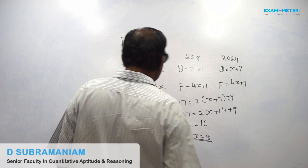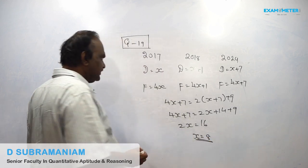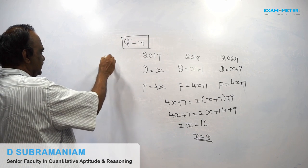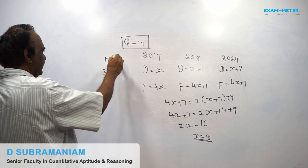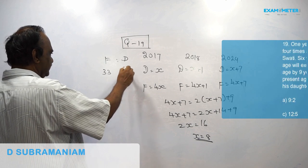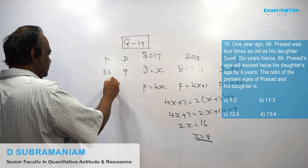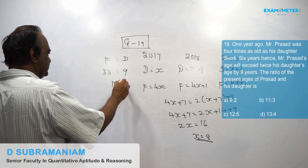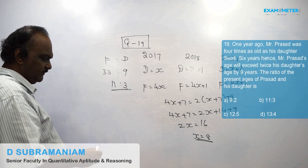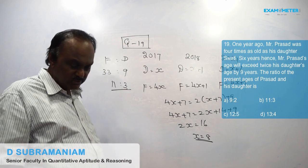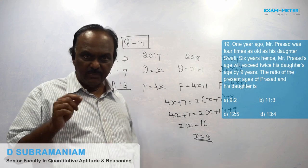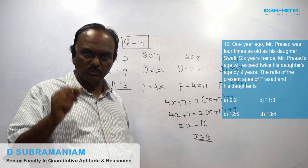x value comes to eight. So father's age is 33 and daughter's age is 9. So the ratio is 11 is to 3. So answer is B, 11 is to 3.